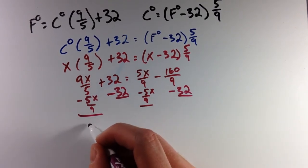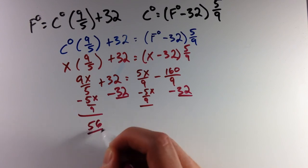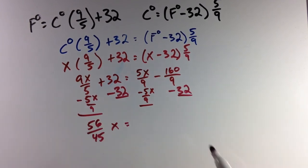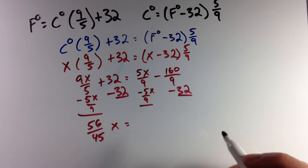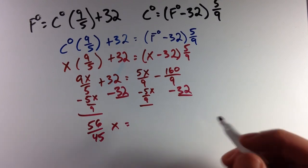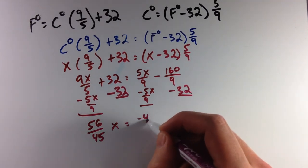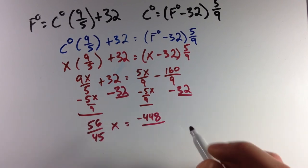That simplifies, I did the math already, and that's 56/45 x equals -160/9 minus 32. That simplifies to be a good old fraction, 448/9.